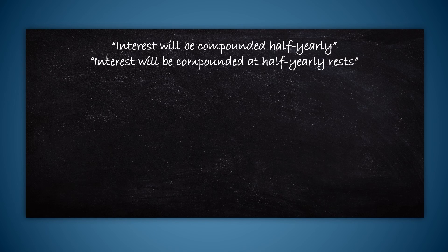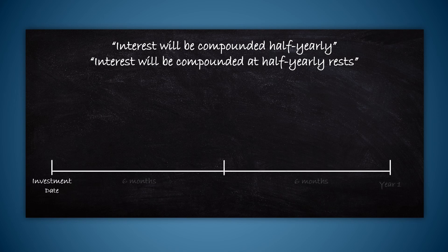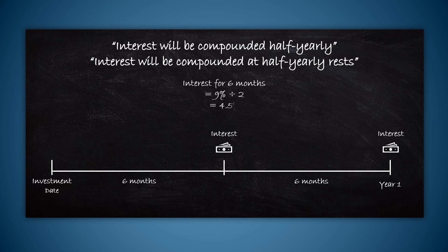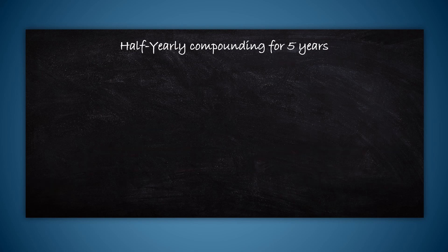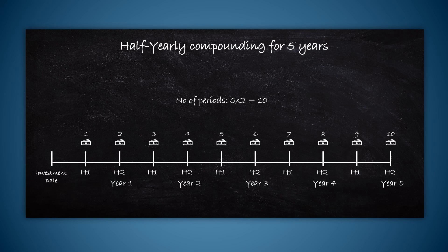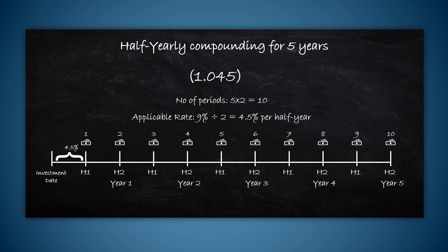But if a bank says the interest will be compounded half-yearly, or at half-yearly rests — both these terms mean the same — it means they will add the interest to the principal after every 6 months. But in 6 months, you can't earn the entire 9%; what you will be getting is half of 9%, which is 4.5% for every 6 months. This will happen twice a year, and that will be 5 × 2 = 10 times in 5 years. You get the rate applicable for each compounding period by dividing the annual rate by 2, and the number of periods by multiplying by 2. Now the formula becomes 1.045 to the power 10.